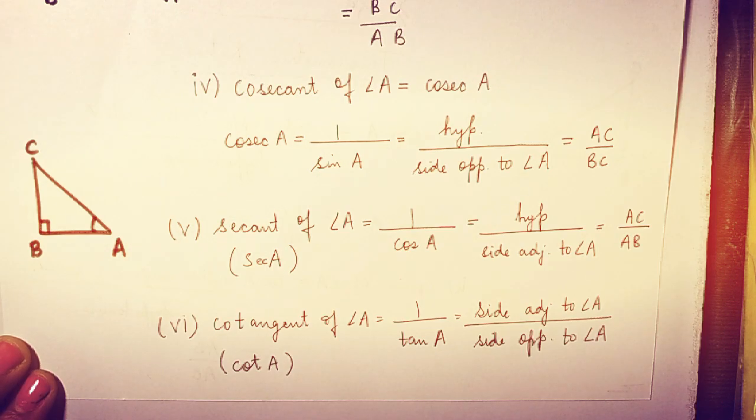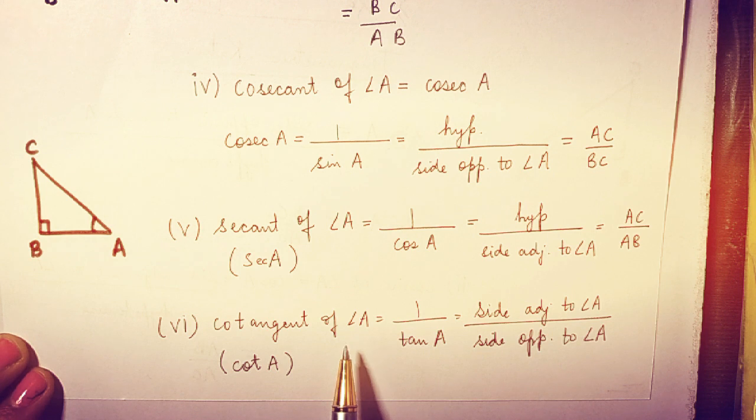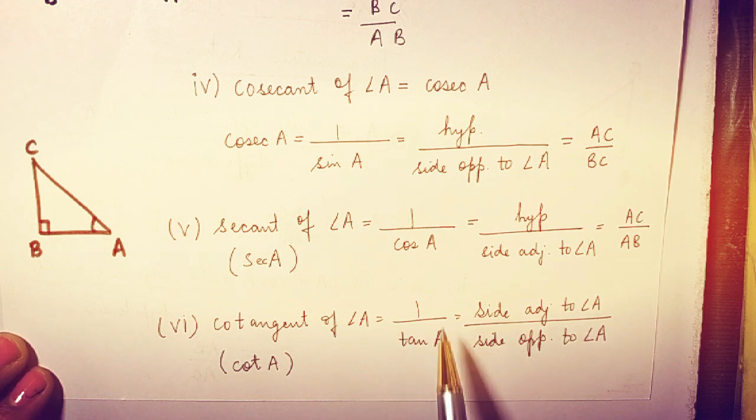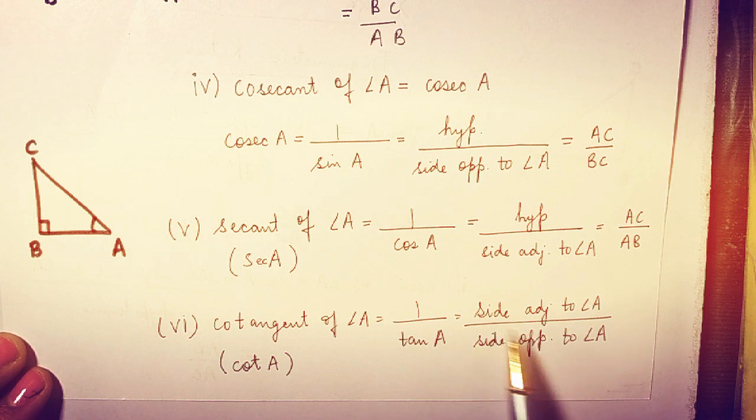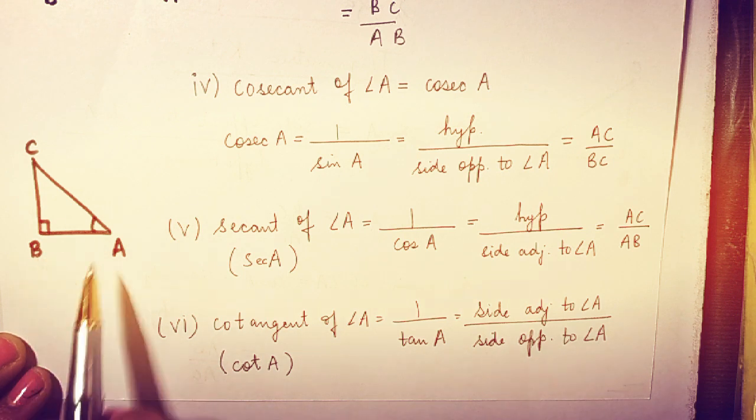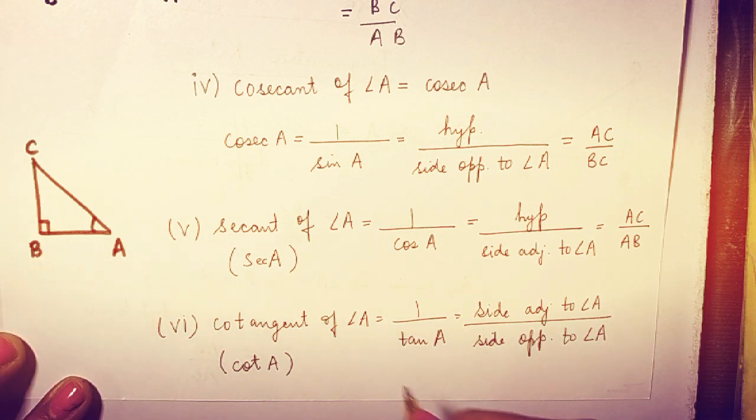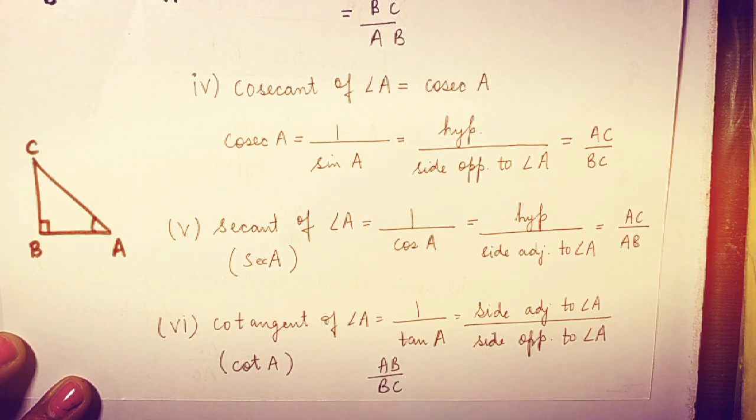The last trigonometric ratio is cotangent of angle A. So it is nothing but reciprocal of tan A. 1 upon tan A is cot A, which is defined as side adjacent to angle A divided by the side opposite to angle A. So the adjacent side is AB and the opposite is BC, so it is the ratio of AB upon BC.